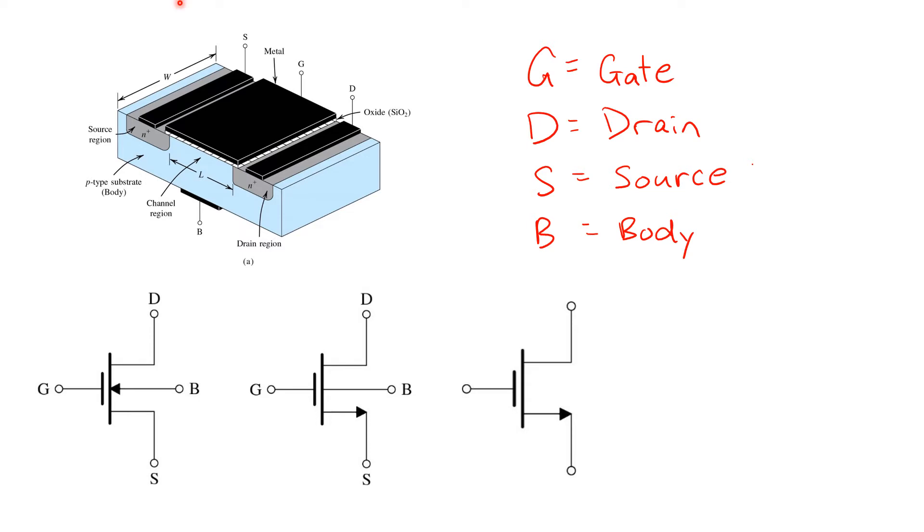As with any good schematic symbol, its picture gives us a clue as to the device's operation. You'll notice all three symbols represent the gate with a line separated by some white space between a second line. This line here that connects the drain and source represents the channel region, and the line to the left here obviously represents the gate. They're separated by white space to remind us that the gate and channel region are separated by an insulator, so DC current can't flow into the gate.